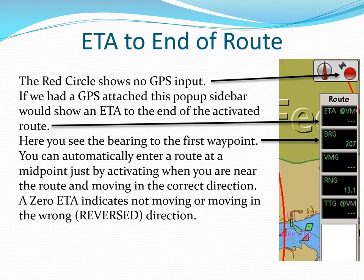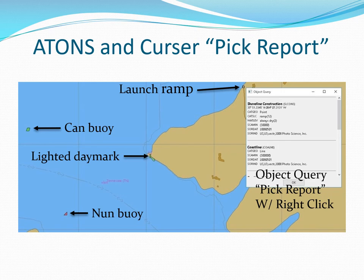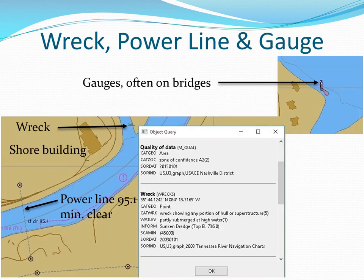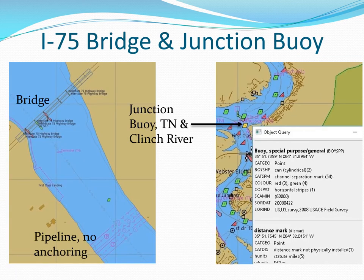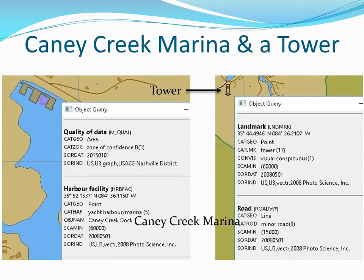Once a route is active, a sidebar on the right gives updated route information. Right clicking on an object can provide a cursor pick report, like the launch ramp information shown here. Some data is displayed on charts, but much more is available with a cursor pick report, like the wreck shown here. Other chart data and cursor pick reports are shown on this slide. Data on marinas and landmarks is also available with a cursor pick report.